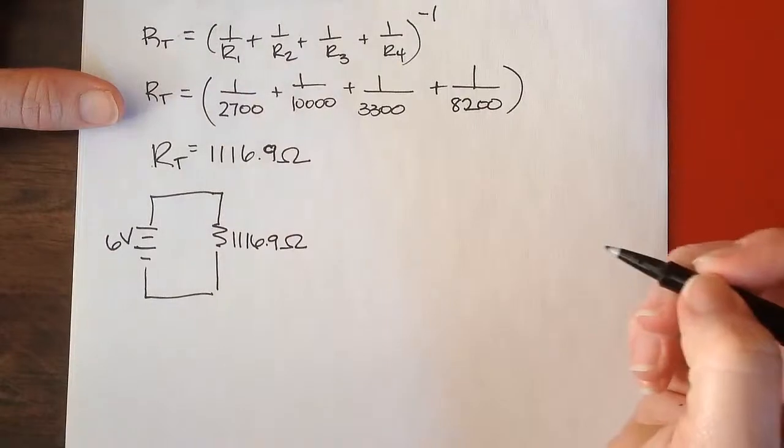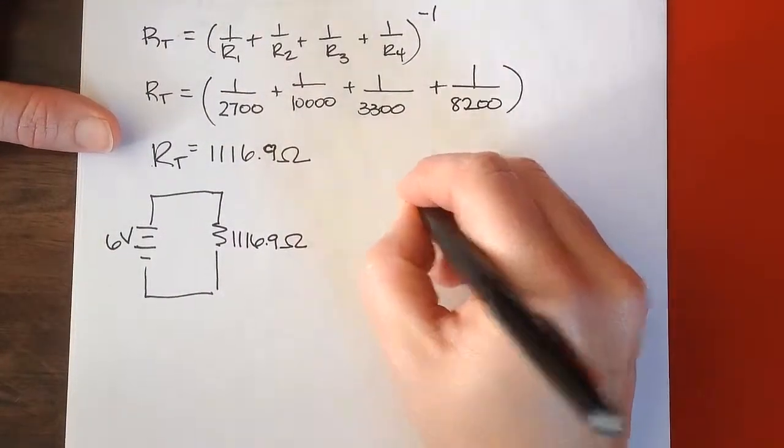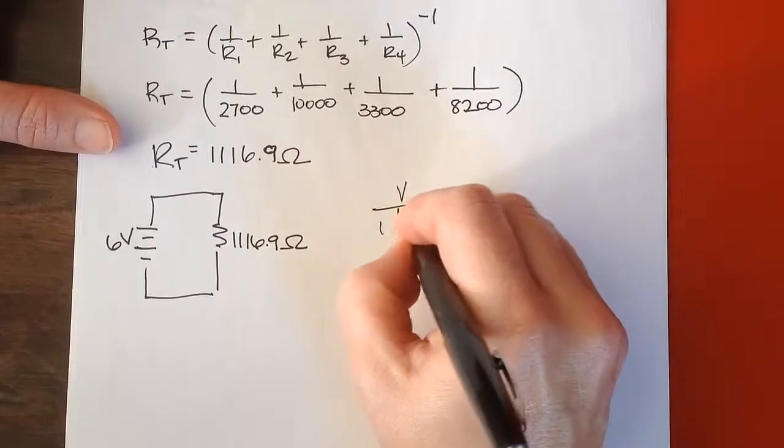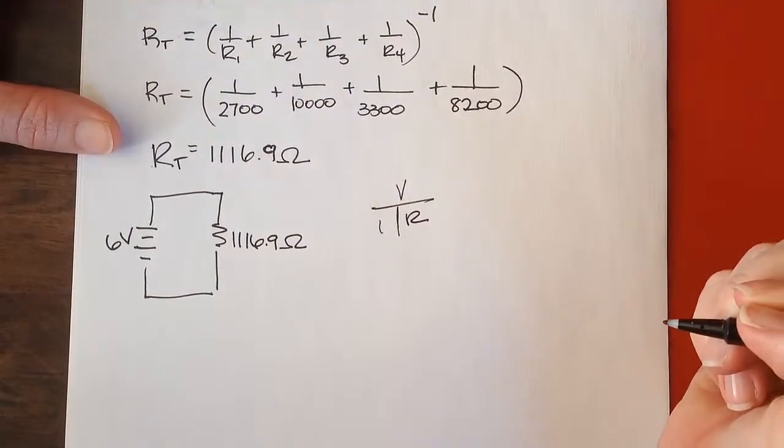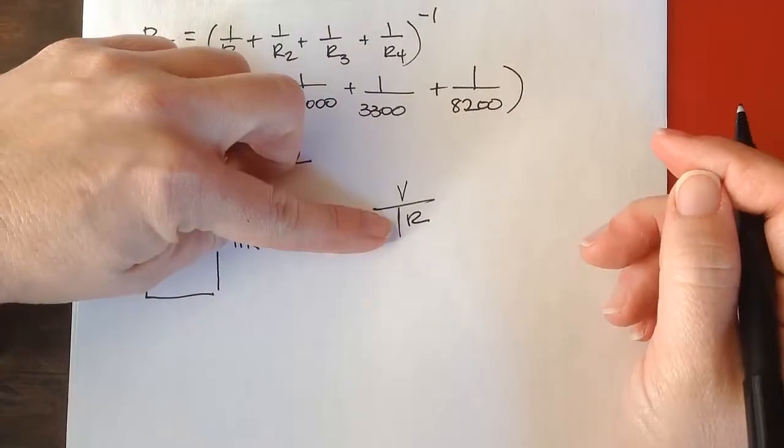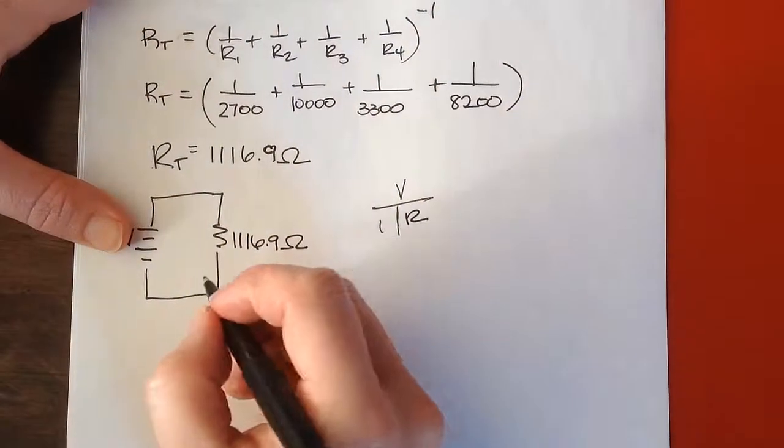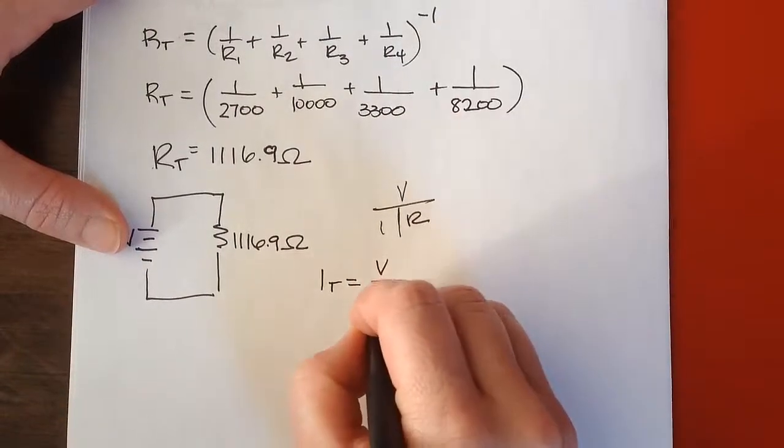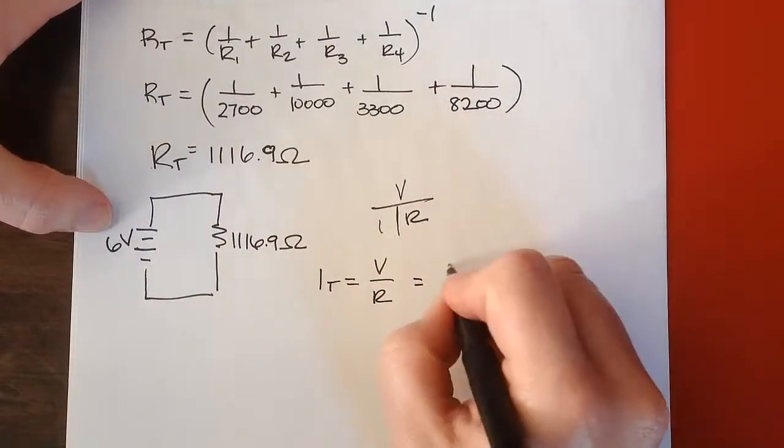So if I want to find the total current, I can use Ohm's Law. If you'd like to use this little shortcut, we're looking for I, so it's V divided by R. IT equals V divided by R. The V is 6 volts.